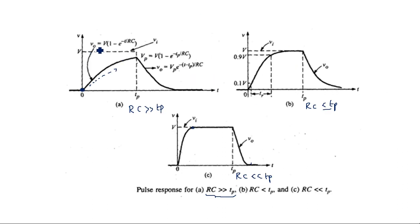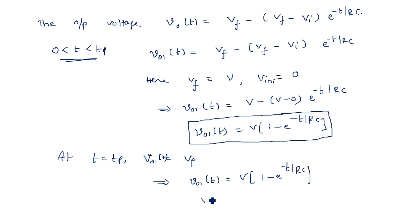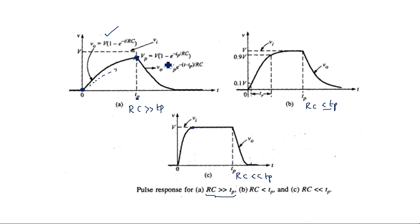At t = tp, the output voltage is vp. Substituting into the expression: vp = V × (1 − e^(−tp/RC)). This gives us the voltage at the particular time instant tp.